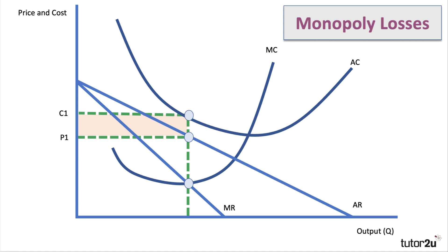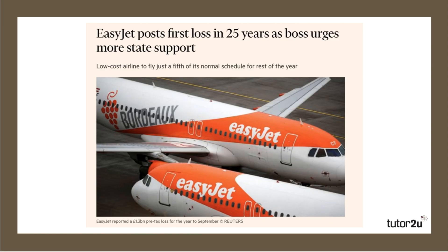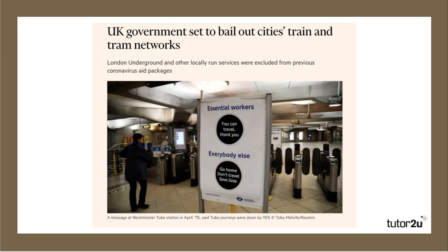Find the profit-maximizing point where MC meets MR — the price is P1, but the cost per unit is C1, so that would be the loss-minimization point. You could make a smaller loss than that, but you can't make a profit. This is often the case when there's a substantial fall in demand and monopolists have high fixed costs that are tough to reduce. For example, due to the coronavirus pandemic, EasyJet posted its first loss in over 20 years.